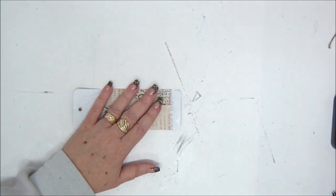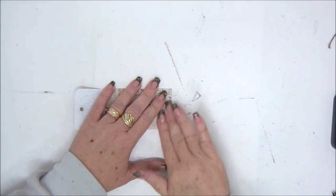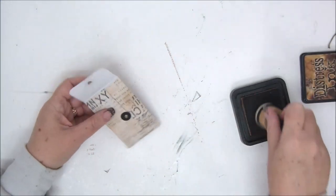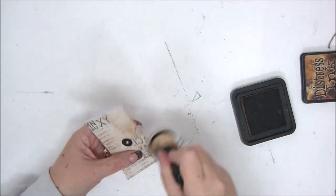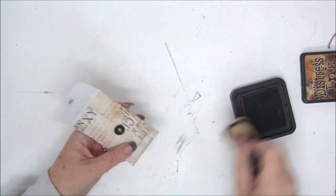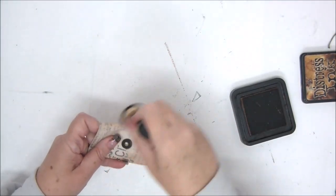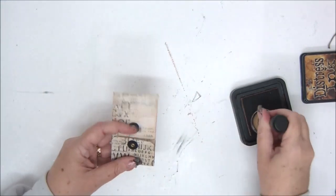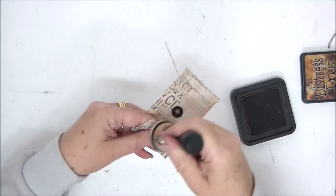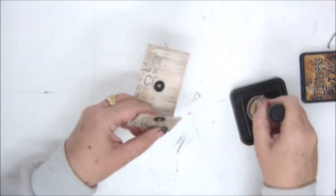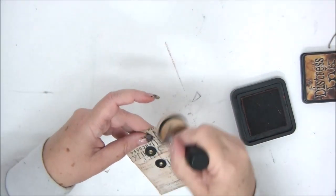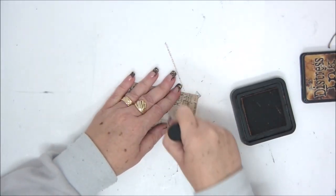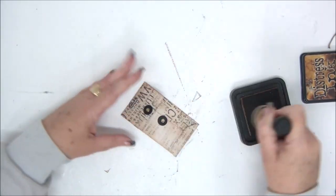Now the last thing that we need to do is add a twine. I want to add a little bit more ink. That is completely optional. At this point, if you want, if you don't want, it's completely up to you. I'm just adding some inking on the edges. I really like how this envelope turns out.